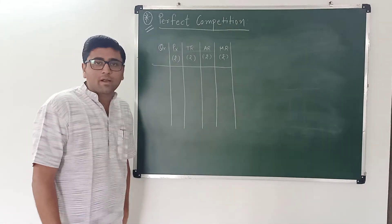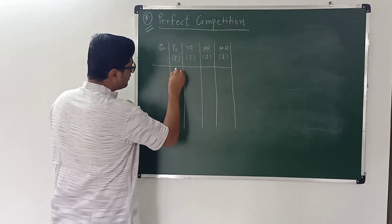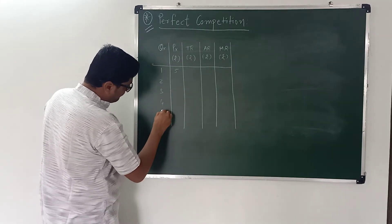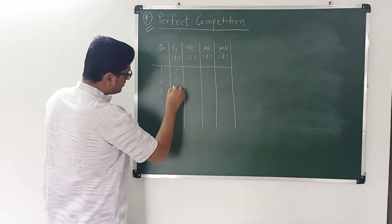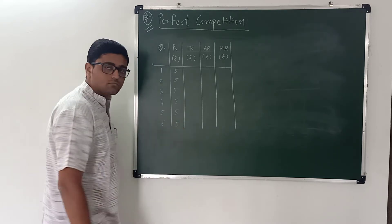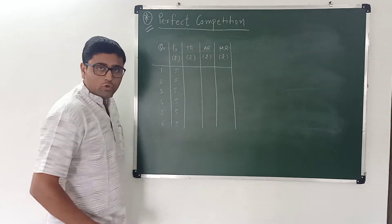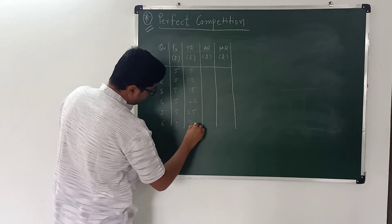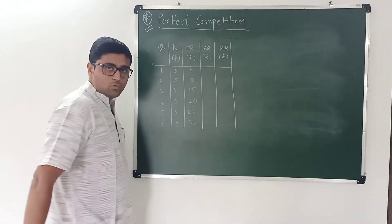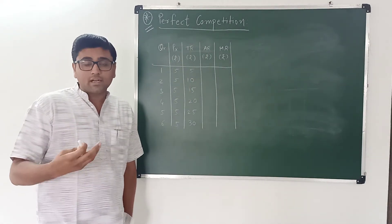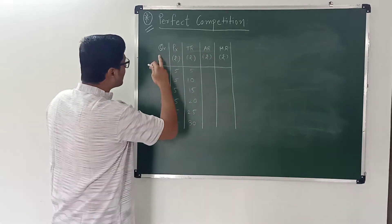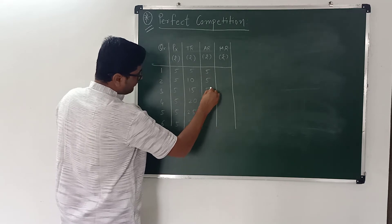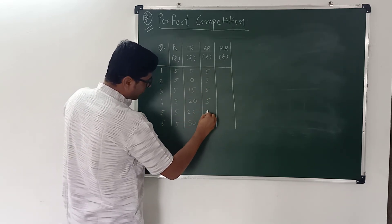We know that this price is determined by the market. For example, suppose this price is 5. The firm is selling 1, 2, 3, 4, 5, 6 units. Total revenue is P times Q: 5×1=5, 5×2=10, 15, 20, 25, 30. Average revenue is TR divided by quantity: 5/1=5, 10/2=5, 15/3=5, 20/4=5, 25/5=5, 30/6=5.